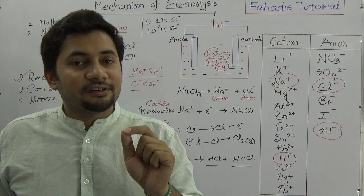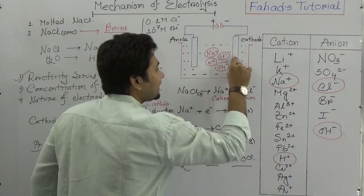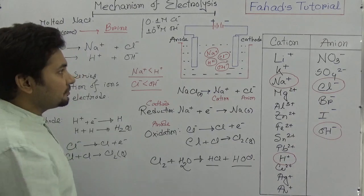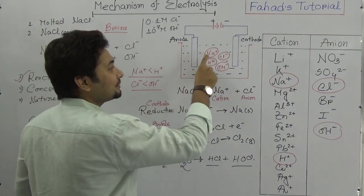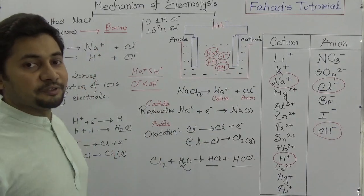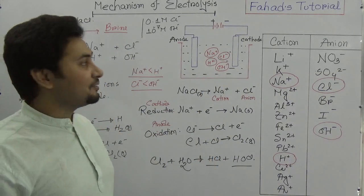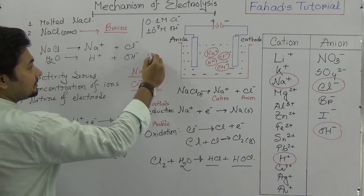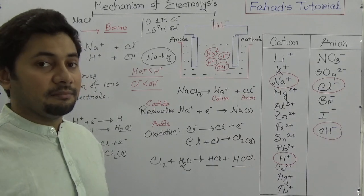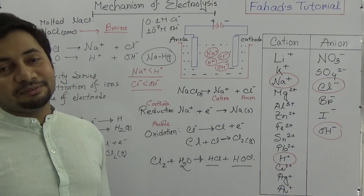The third factor is the nature of the electrode. If platinum is used at the cathode, hydrogen goes first. But if mercury (Hg) is used as the cathode, sodium goes first, and sodium combines with mercury to form an amalgam — a new compound of sodium and mercury.